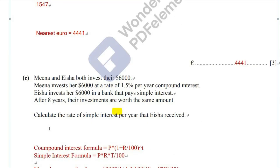Before we move on, we should know the formula for both compound interest and simple interest. The formula for compound interest is: principal value P, the initial value, multiplied by (1 + rate/100) to the power of time, where time is the number of years. The formula for simple interest is: principal times rate times time divided by 100, which gives the interest earned.